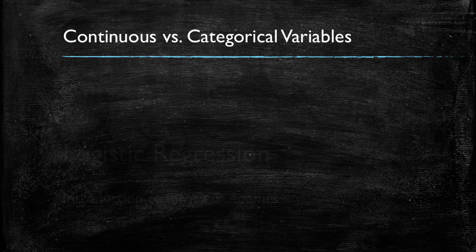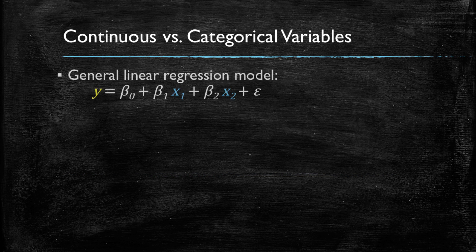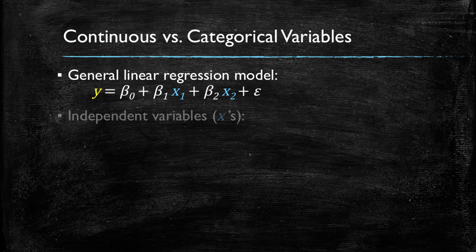Let's start by recapping continuous and categorical variables in the context of a general linear regression model as the one shown. Think of what could drive customers' preferences to buy a certain product.